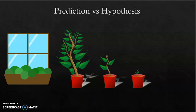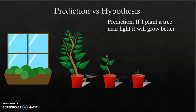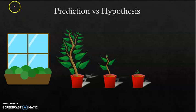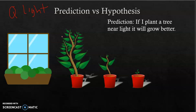Let's clear up the difference between predictions and hypotheses. A prediction is making a statement about something that will occur. My overall question here is: how does light affect plant growth? That's the big overarching question guiding my design and experiment. My prediction would sound something like: if I plant a tree near light, it will grow better. I'm just saying what I think is going to happen — that is a prediction.